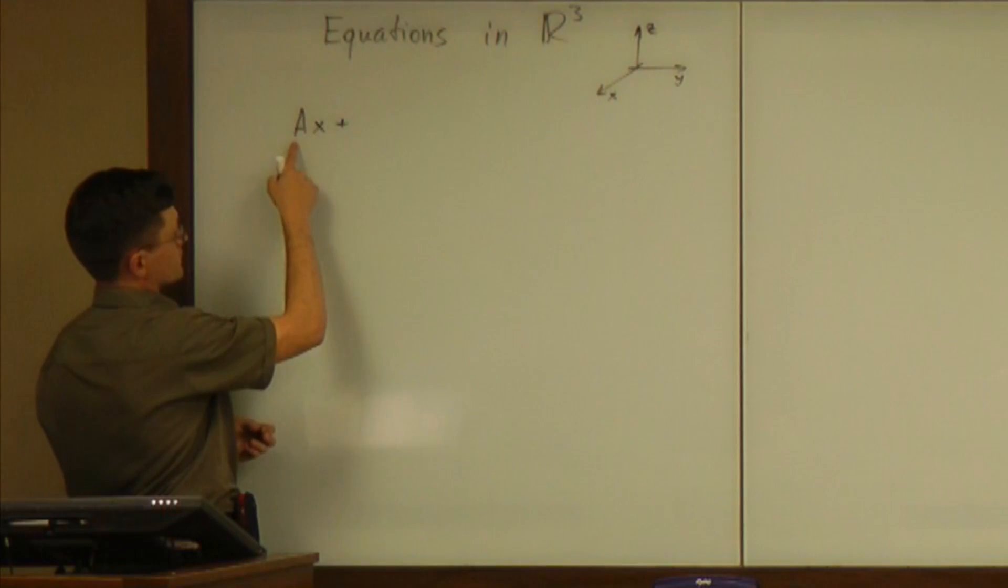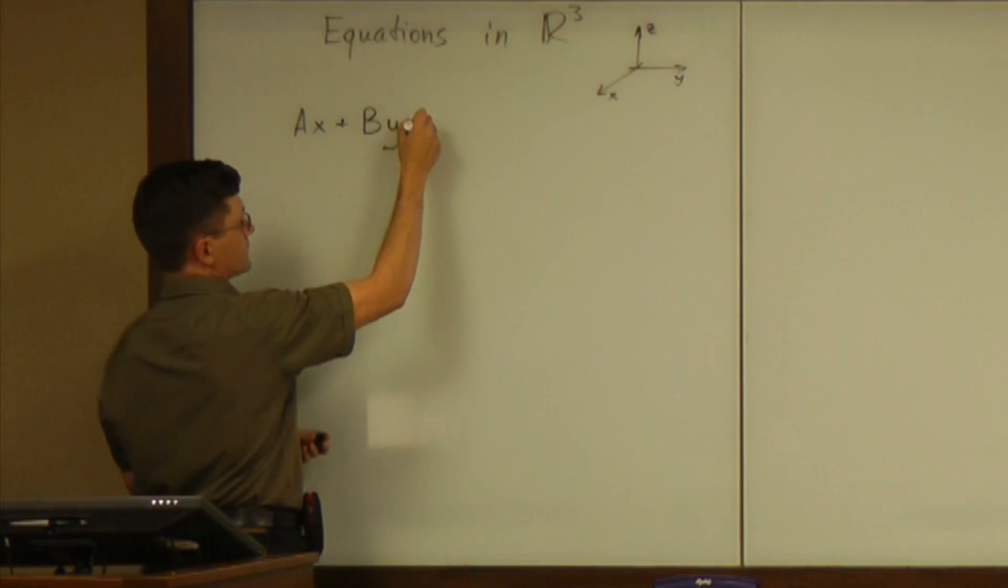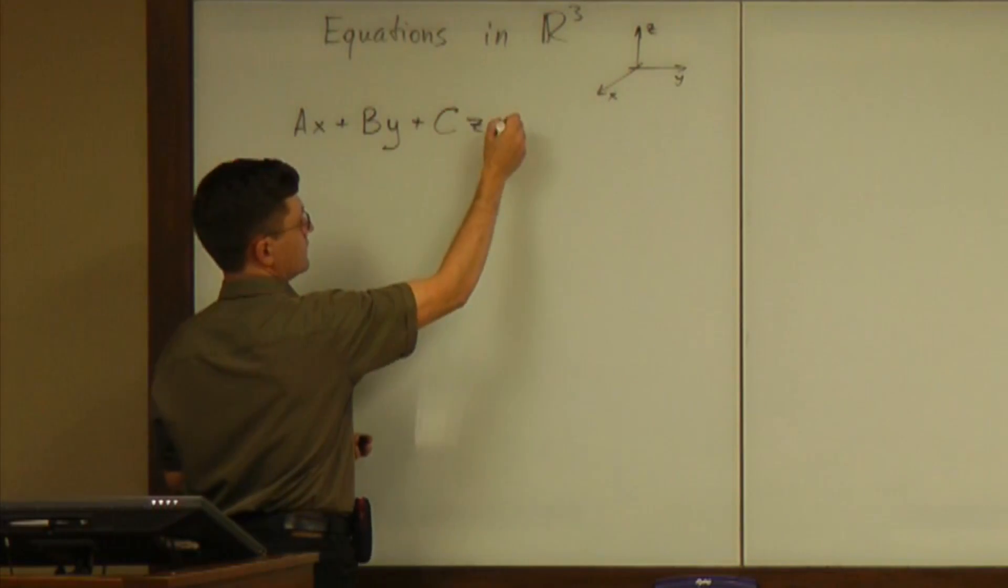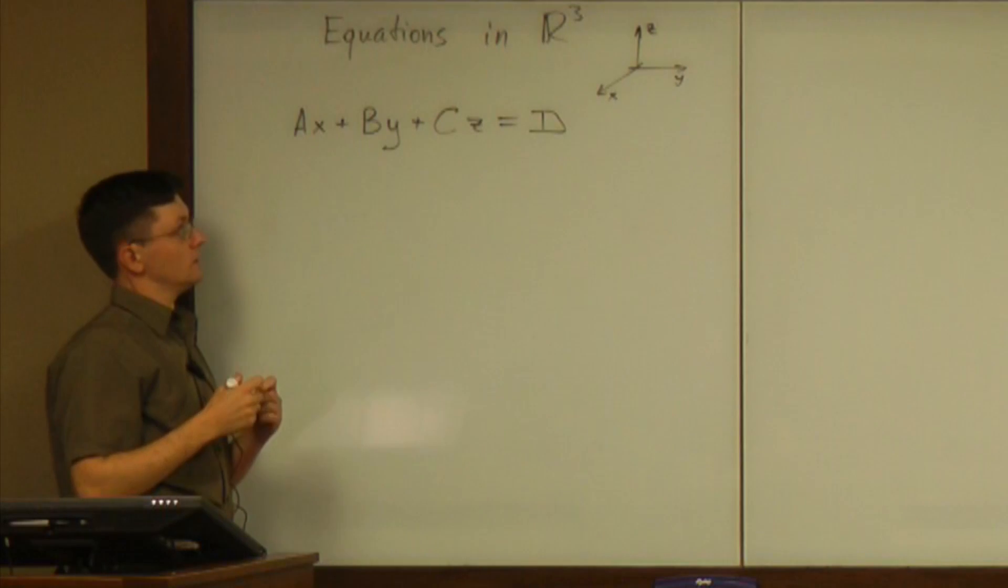So the general equation is a constant times x plus a constant times y plus a constant times z equals some constant. So that's a general first degree equation in three-dimensional space.